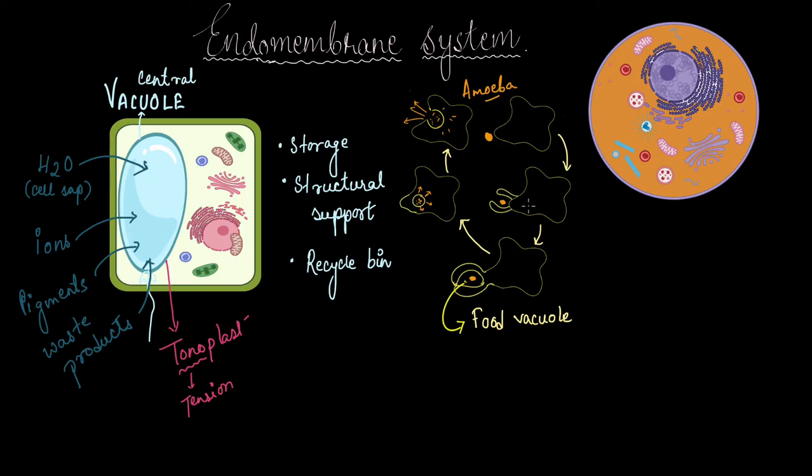Now every time amoeba encounters food, it extends its cell membrane around the food forming pseudopodia. So these are false feet or pseudopodia that engulf the food forming a food vacuole. So this vesicle kind of thing that has the food inside, we call it the food vacuole.